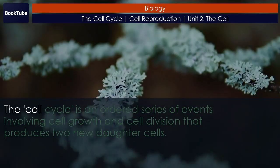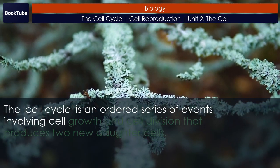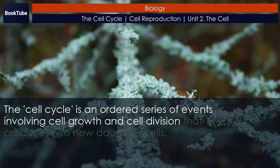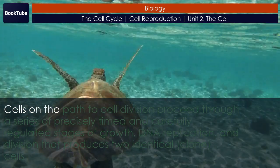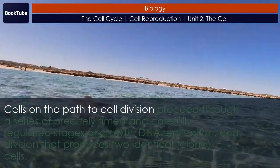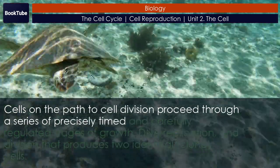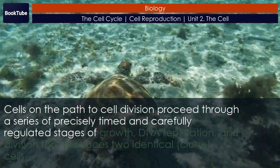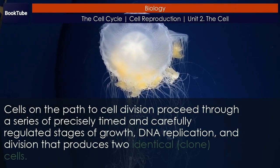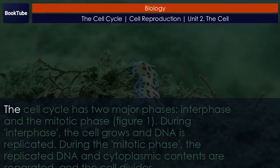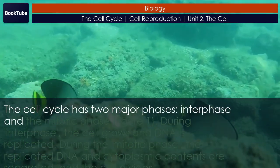The Cell Cycle. The cell cycle is an ordered series of events involving cell growth and cell division that produces two new daughter cells. Cells on the path to cell division proceed through a series of precisely timed and carefully regulated stages of growth, DNA replication, and division that produces two identical clone cells. The cell cycle has two major phases: interphase and the mitotic phase.